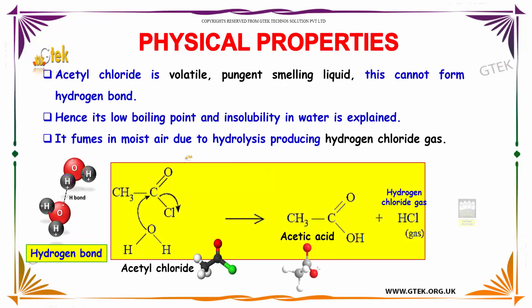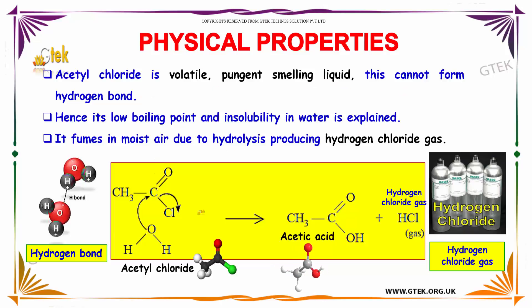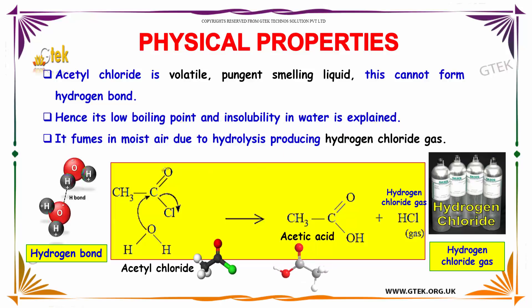Acetyl chloride is a volatile, pungent-smelling liquid. It cannot form hydrogen bonds, which explains its low boiling point and insolubility in water. It fumes in moist air due to hydrolysis, producing hydrogen chloride gas.